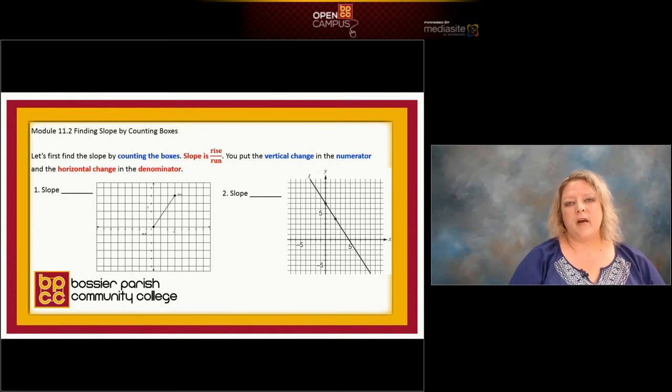Remember, when we count up or down, that number goes in the numerator, and when we count left to right, that number goes in the denominator. The numerator is the top number in the fraction, and the denominator is the bottom number.